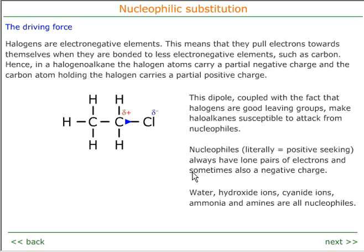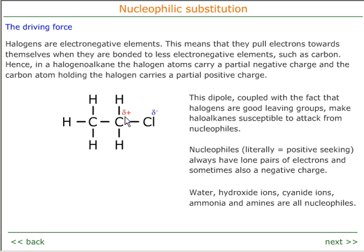The driving force behind nucleophilic substitution is the electronegativity of the halogen atoms. Electronegativity means that the atoms draw electrons towards themselves along a covalent bond. This produces a dipole between the carbon and the halogen, giving the carbon atom a partial positive charge and the halogen atom a partial negative charge. This partial positive charge can then be attacked by things seeking a positive charge — a nucleophile.